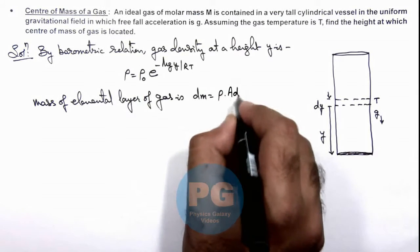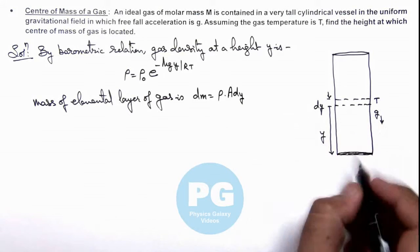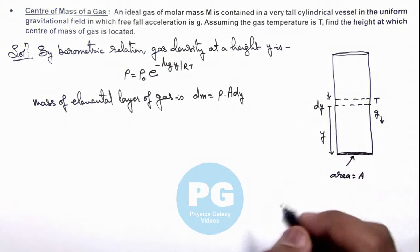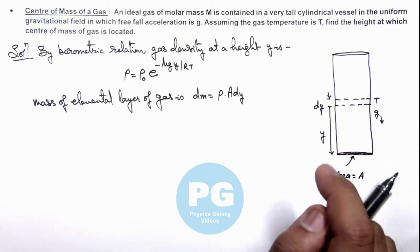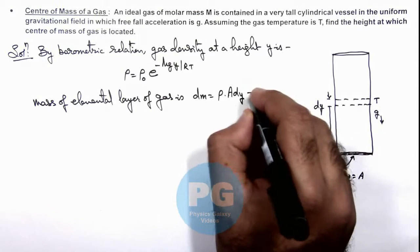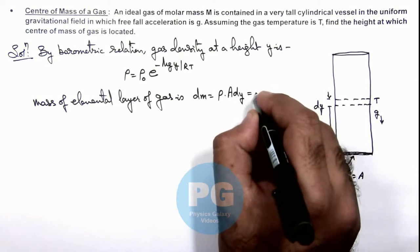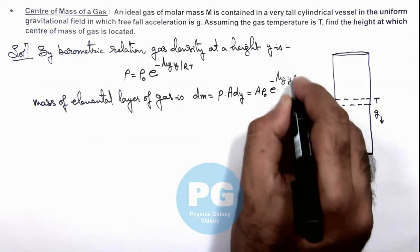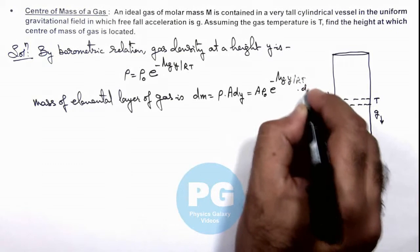A·dy if A is the cross-sectional area we can consider. However this is not given, but we can consider that it is of base area A and its volume will be A·dy. So the value of dm we are getting is A·ρ₀·e^(-Mgy/RT)·dy.